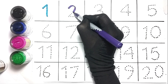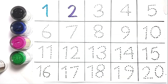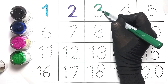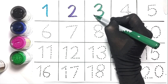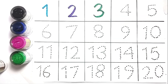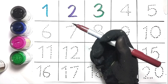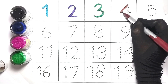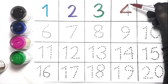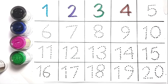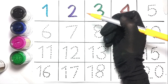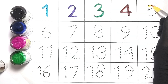2, this is green color. 3, this is brown color. 4, this is yellow color. 5, this is yellow color.